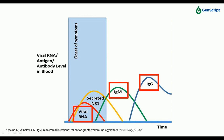Nucleic acid detection for SARS-CoV only gives a positive result when the virus is still present, and is dependent on sampling the appropriate tissues or fluids. Since this is a deep lung infection, it's important to swab far back in the throat to capture virus shed from the deep lung. Improper sampling can easily yield false negative results with qPCR. Antibody tests can confirm infection and serve as a complementary test, giving a positive result even if a PCR test of a suspected case is negative.